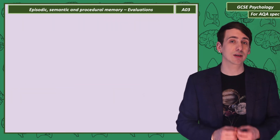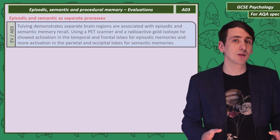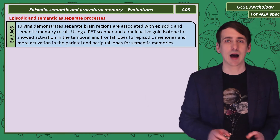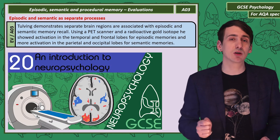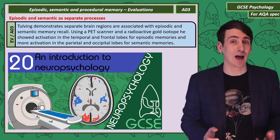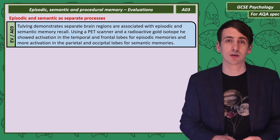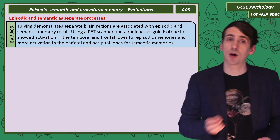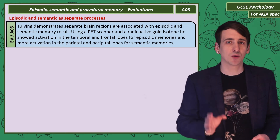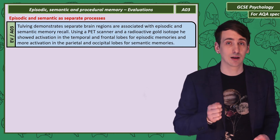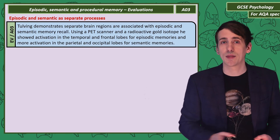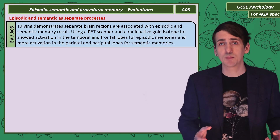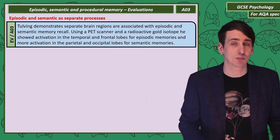Let's look at some evaluations for the types of long-term memory. We can find support for episodic and semantic memories being separate processes with the work of a psychologist called Tulving. Tulving injected people — and himself — with a radioactive form of gold. You can detect that gold in the brain on a PET scanner, showing what parts of the brain are active. When participants thought of episodic memories, areas in the frontal and temporal lobes lit up. When they thought of semantic memories, areas in the parietal and occipital lobes lit up. As different types of memory use different brain regions, this suggests they are separate processes.